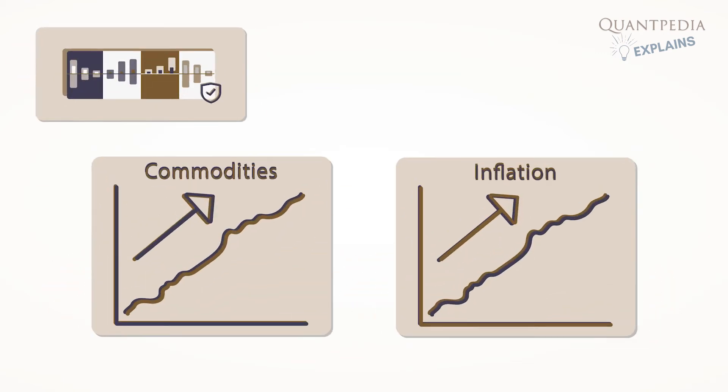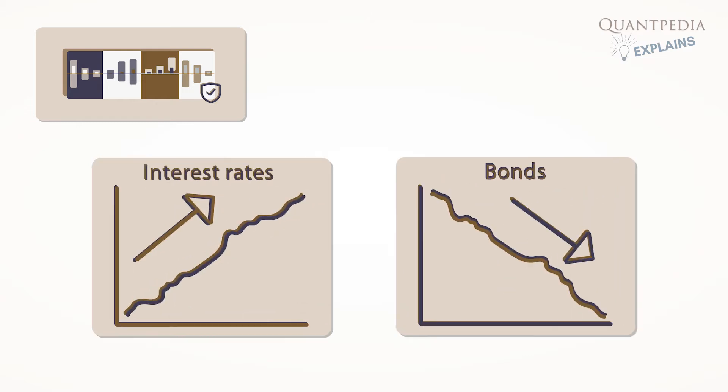However, the Fixed Income Market Phases report works on an analogous principle, only with bonds and rates. The relationship between interest rates and bond prices is reversed. When interest rates rise, bond prices fall, and if interest rates fall, bond prices rise.